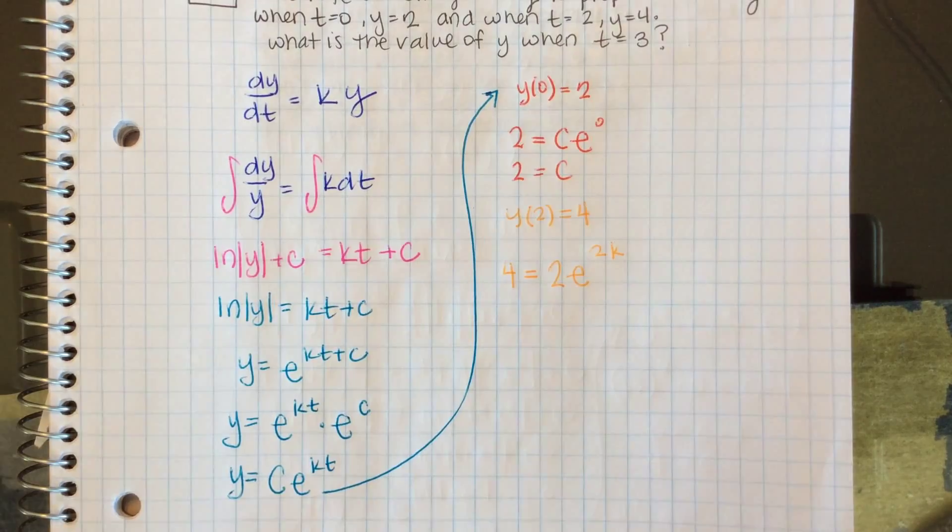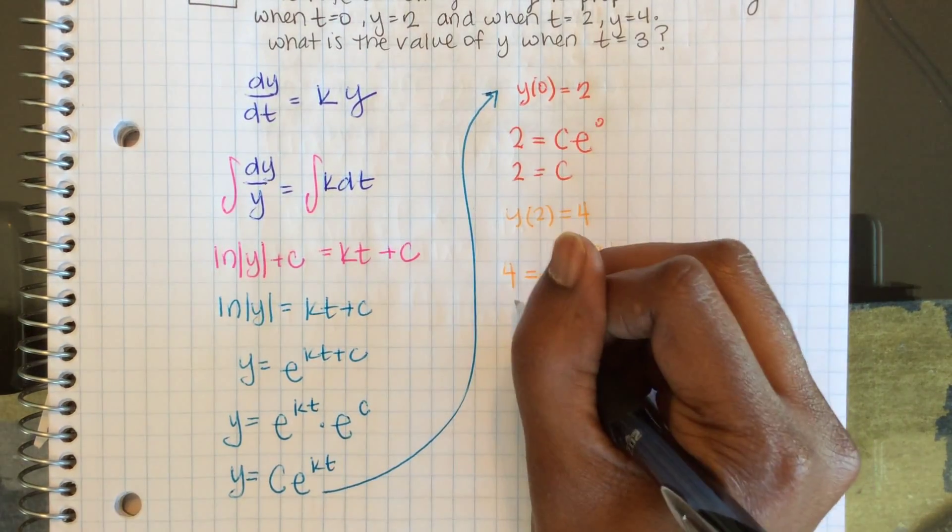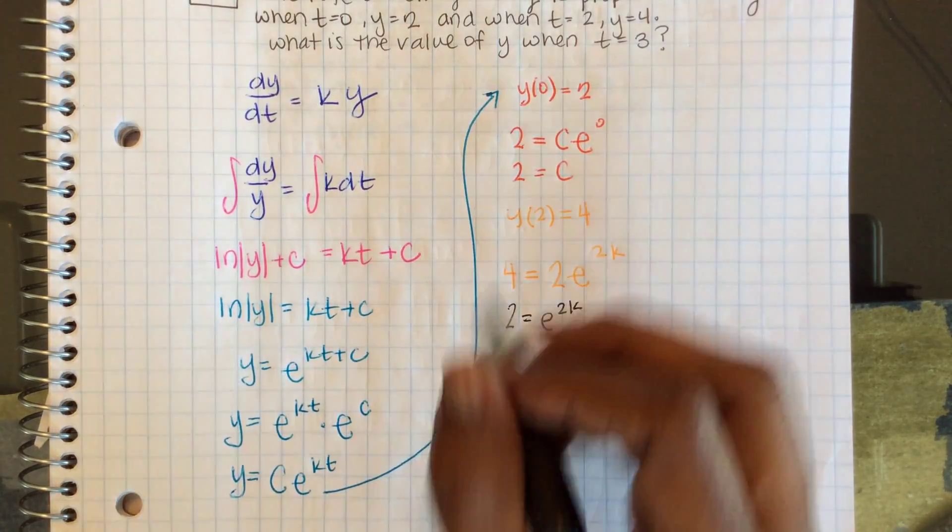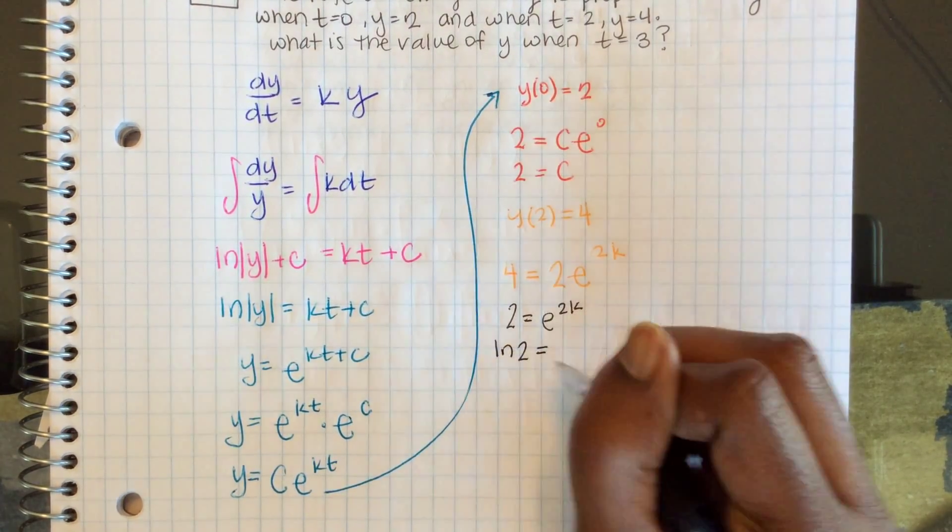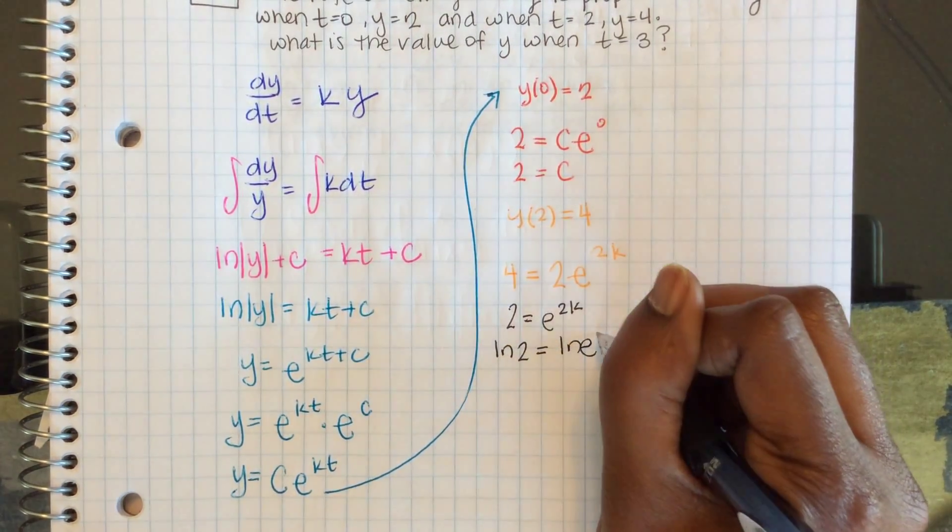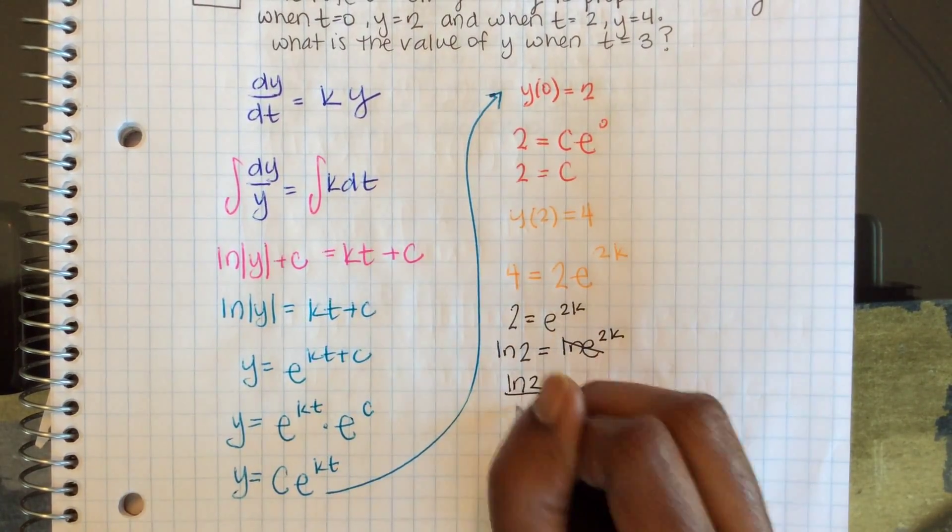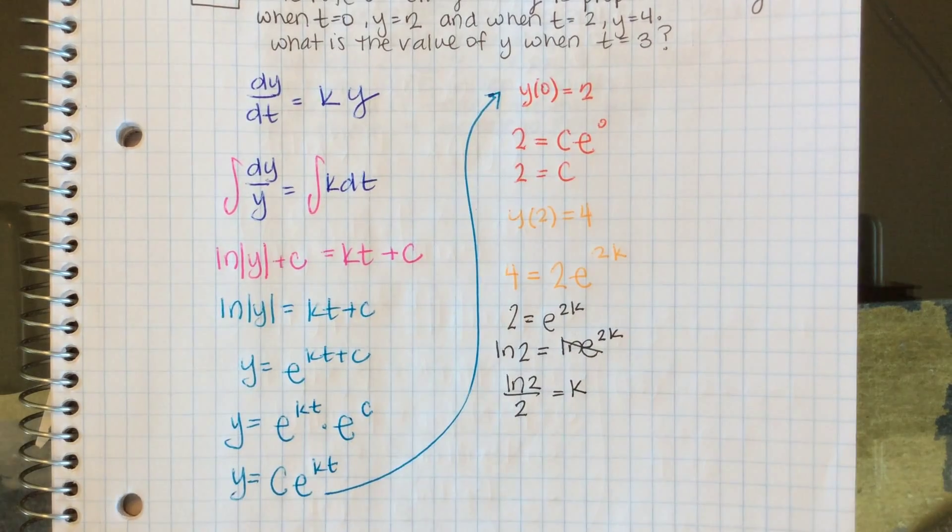Let's isolate this by dividing by 2: 2 = e^(2k). Taking ln of both sides: ln(2) = ln(e^(2k)), which simplifies to ln(2) = 2k. Therefore, k = ln(2)/2.